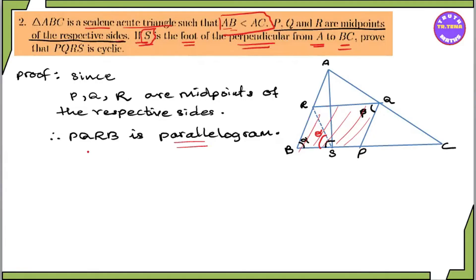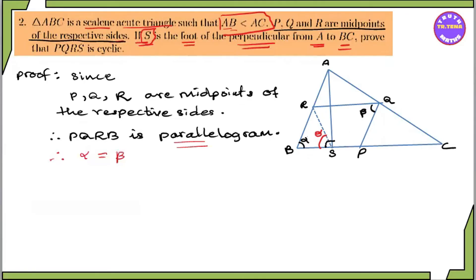Alpha and beta — alpha is equal to beta. Now the perpendicular chain is established. That's why ASB is the angle of ASB.